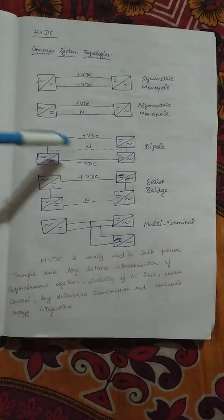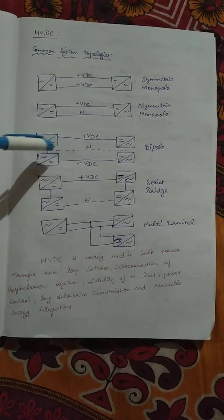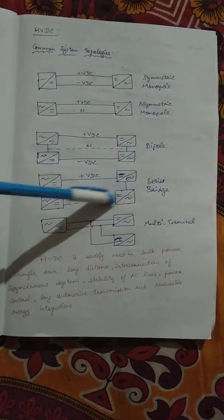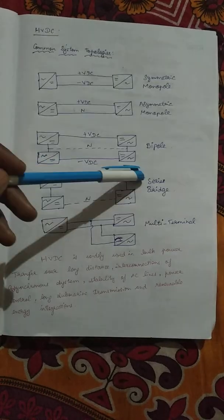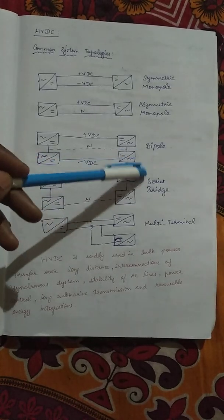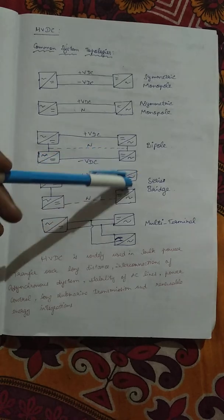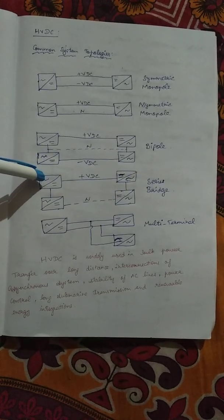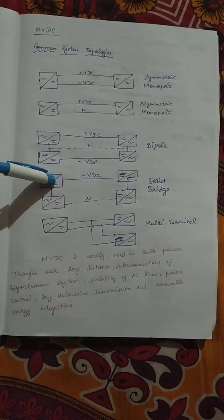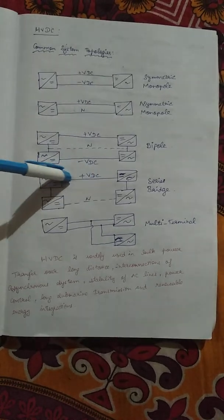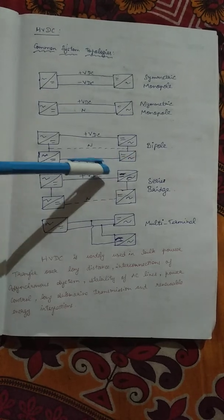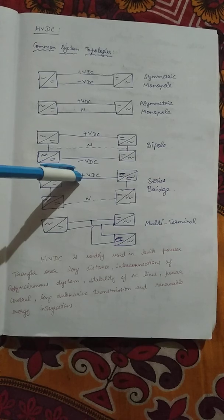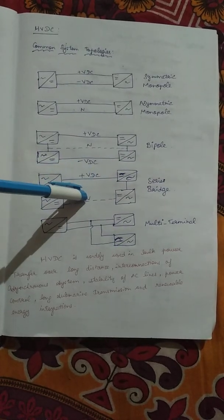In the series bridge configuration, it is connected on a closed path with all four poles. The sending-end AC is converted to DC, which feeds to the receiving end where DC is converted back to AC. The line carries positive voltage and the return path is taken by another line.